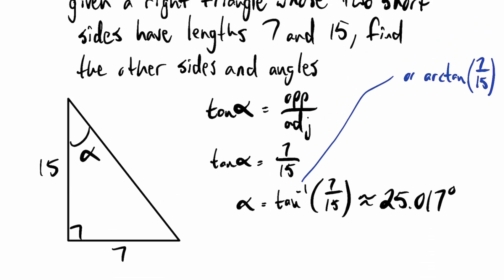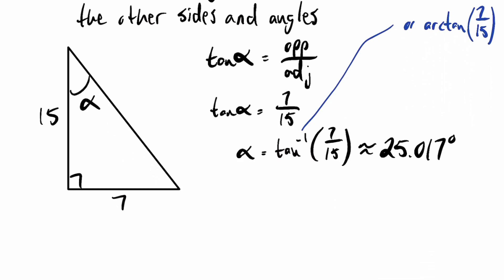So we found alpha. Good job. Now we need to find this other angle, and I'm going to go ahead and call it beta. Theta would work, but whatever. Let's use alpha and beta for the most part throughout this section. So one way to do this would be to notice that 15 is opposite of beta and 7 is adjacent to beta. So tangent of beta is 15 over 7. I could totally do that and that would work out fine. However, I don't need to do that much work.